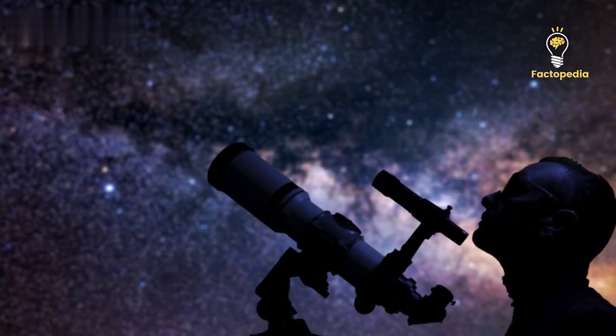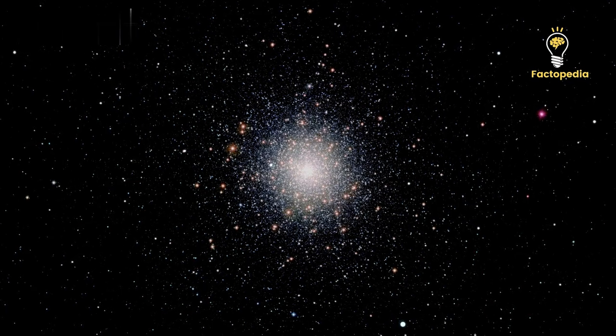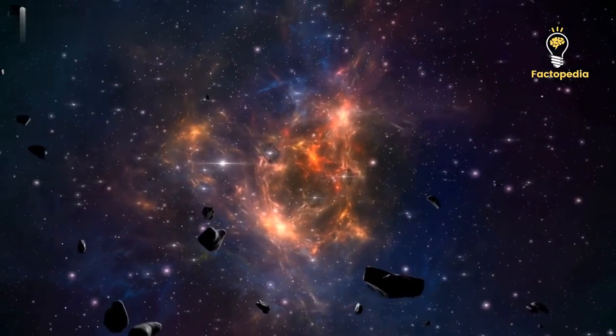Based on existing research, one of the prime places to hunt for intermediate mass black holes is within the cores of globular clusters. These clusters consist of thousands to millions of stars held together by gravity, all originating from the same cosmic cloud.